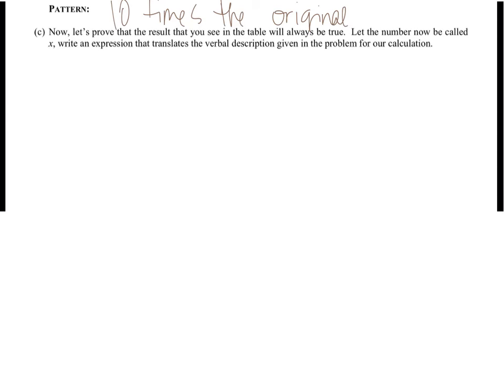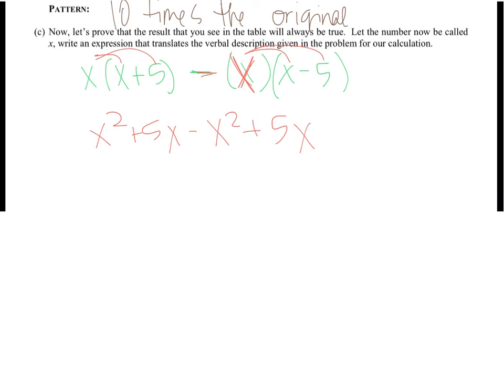So let's look at, if we were to use the letter x instead of a number, what would that look like? So we're going to take a number and multiply it by a number plus 5, and then subtract a number and a number minus 5. So we're going to need to do the distributive property. So I have x times x, which is x squared. And then x times 5, which is 5x. But then this negative is actually attached to the x. So negative x times x is negative x squared. And negative x times negative 5 is positive 5x. So we're going to combine like terms, x squared and negative x squared. Those actually cancel each other out. And then we have 5x plus 5x is 10x. So 10 times the original.